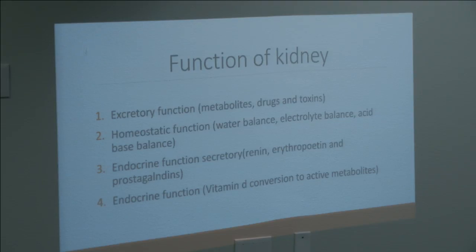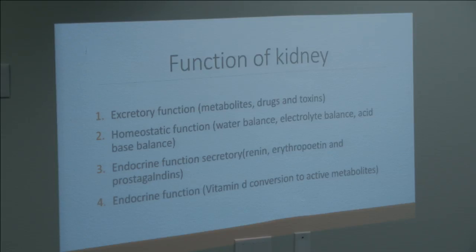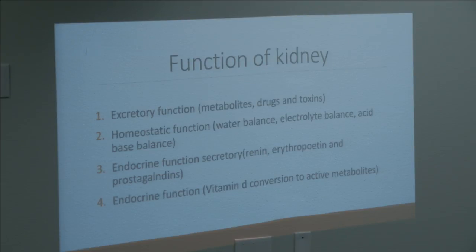The kidney produces a hormone called erythropoietin. This hormone goes to the bone marrow and stimulates it to grow red blood cells. And last but not least, it maintains calcium, phosphorus, and bone metabolism by producing active vitamin D. You take vitamin D from food, it goes to your liver, then to your kidney where it becomes active vitamin D, which maintains calcium balance and helps bone become stronger.